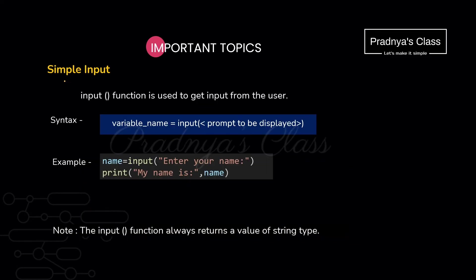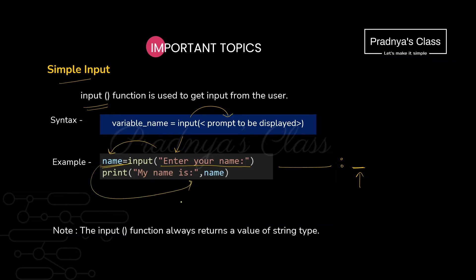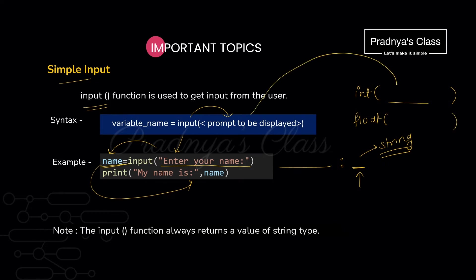You should also know how to take input — for that we will use the input function. The input function takes a prompt that will get displayed; this is optional. If you skip it, the message will not get printed and only the cursor will wait for your input. One important thing to remember: whatever input you give, it will automatically get converted to a string value. If you want to convert it to integer, enclose the whole input function in the integer function. Similarly, to convert to float, enclose it in the float function.